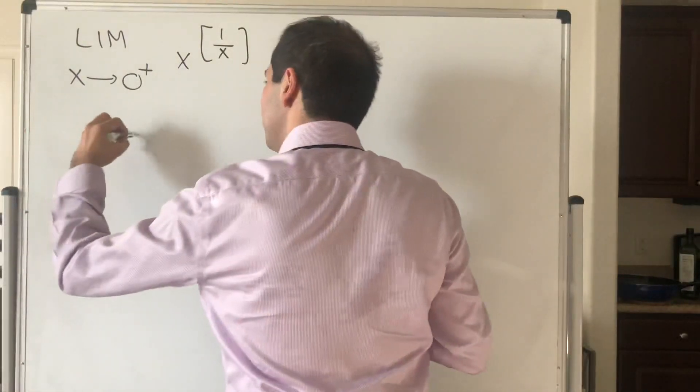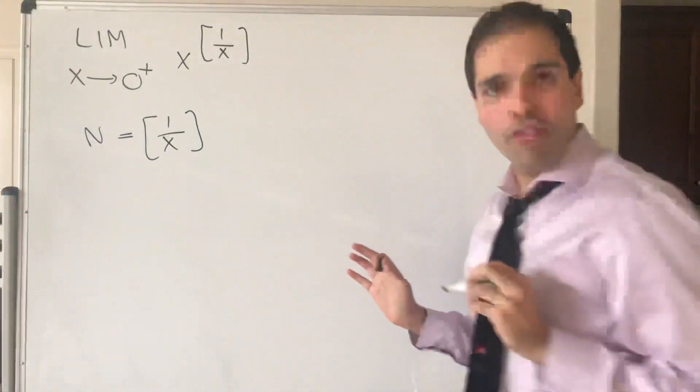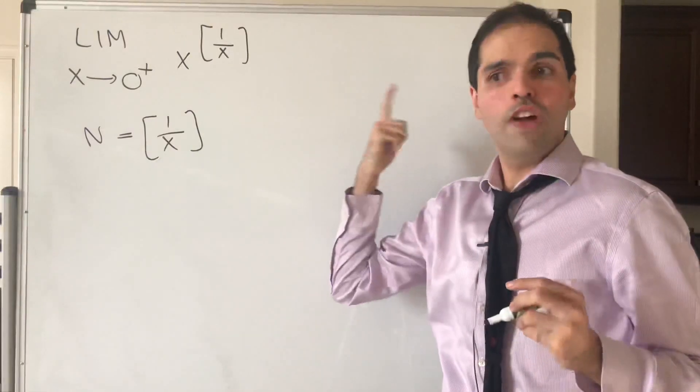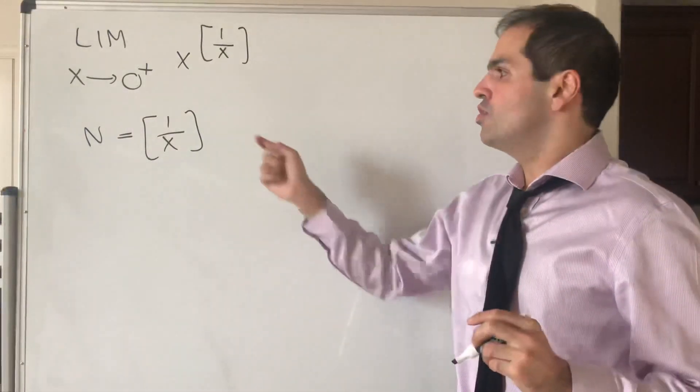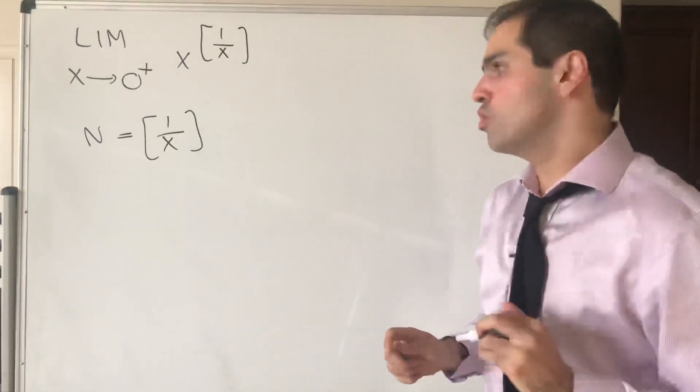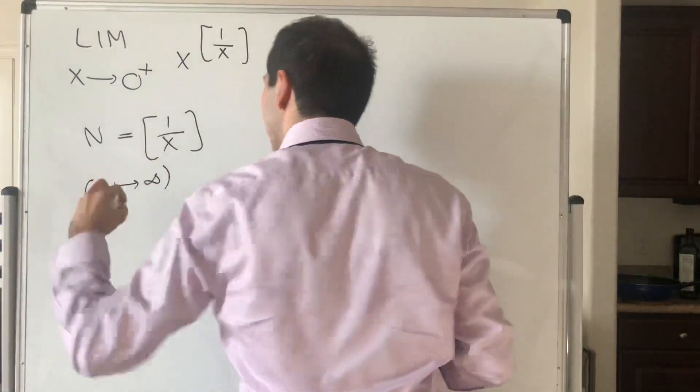So let n be the floor of 1 over x. Before we move on, just a little remark: if x goes to 0 plus, 1 over x goes to infinity. So in particular, the floor, or the integer part, also goes to infinity. Remember this for what's to come.